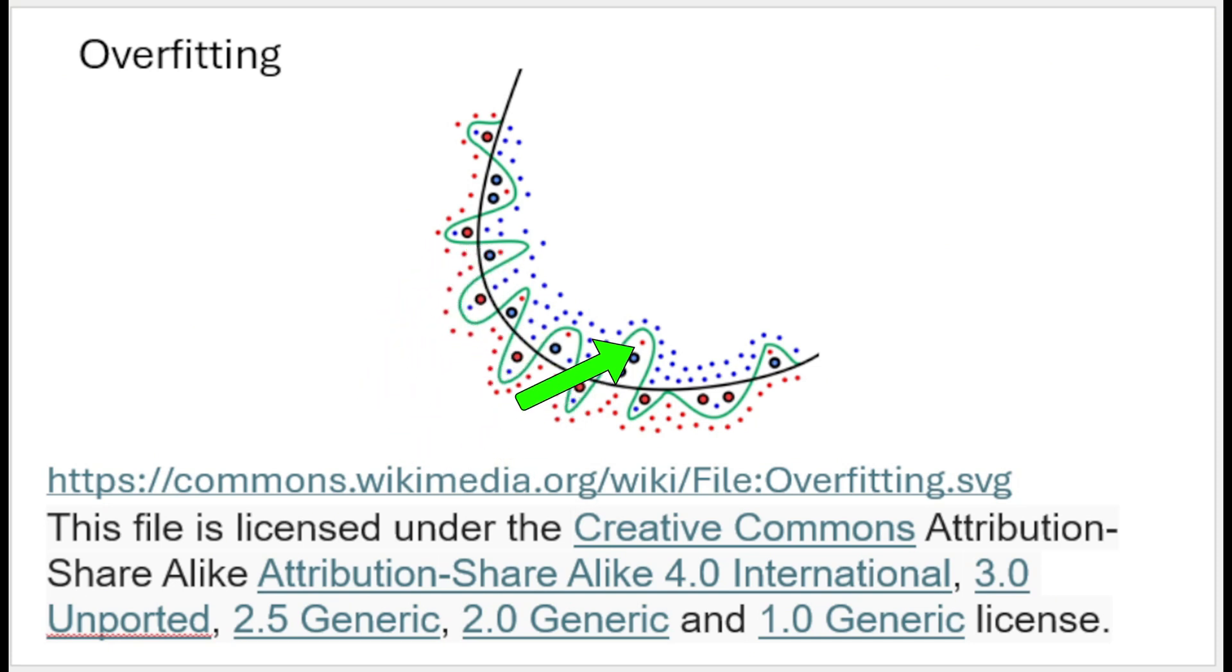Now here we have a picture from Wikipedia. The green line depicts an overfitted model. It is closely tracing the training data. This dependence on the training data may result in a higher error rate on new unseen data, as represented by the black outlined dots here.